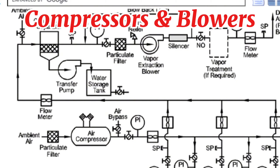Compressors and blowers are used to move air or gas through an operational process. Compressors typically operate at a high pressure to volume ratio, while blowers operate at a low pressure ratio. There are various types as follows.